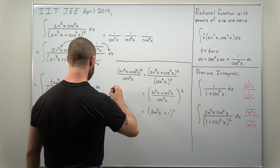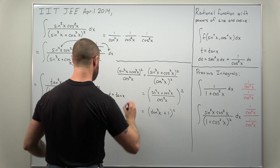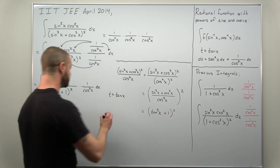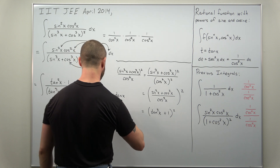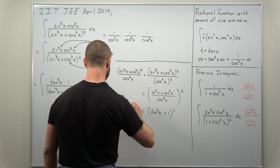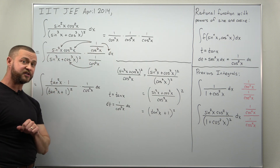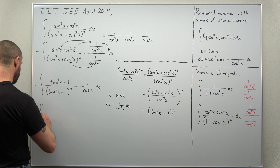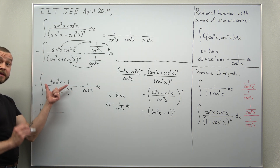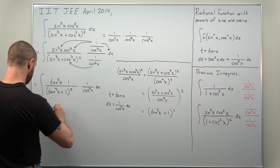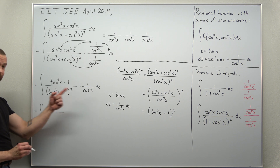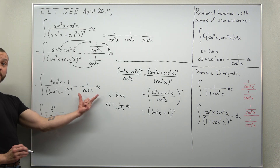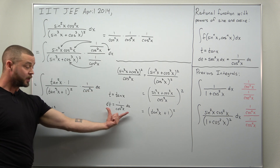Now we can implement our substitution t equals tangent of x, because the derivative of tangent is secant squared, or 1/cos²(x). Rewriting our integral from x into terms of t: the numerator becomes t squared, the denominator becomes (t³ + 1)², and (1/cos²(x))dx becomes dt.